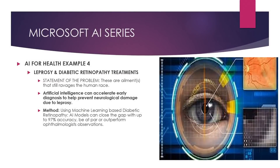The final examples cover leprosy treatment and diabetic retinopathy treatment. These ailments remain an issue to the human race. Artificial intelligence can accelerate early diagnosis to prevent neurological damage due to leprosy. Applying machine learning-based diabetic retinopathy AI models can close the gap with up to 97% accuracy — being at par with or outperforming ophthalmologists' observations of these patients.